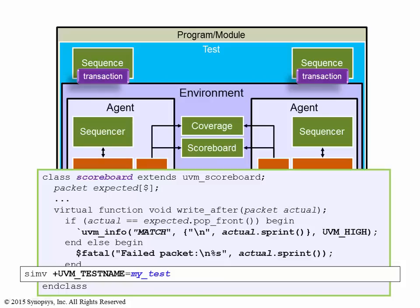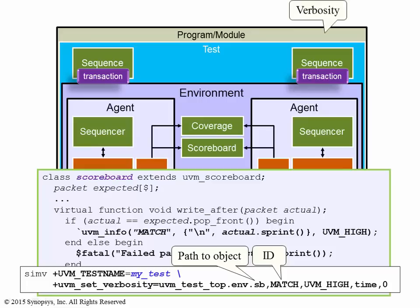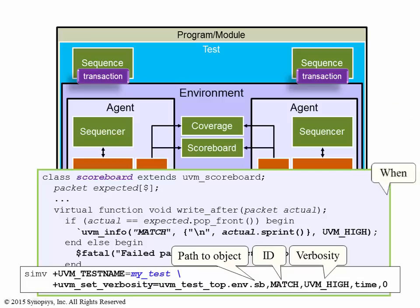The runtime switch to do this is called uvm_set_verbosity. The first argument to the switch is the object you want to control. The second argument is the ID of the message you want to control. The third argument is the verbosity level you want the object to report at. In this case, I want the scoreboard object to report at UVM_HIGH verbosity for the matching ID messages. The last argument is the simulation time you want the object to act on for this verbosity, and it can also be specified on a phase-by-phase basis.